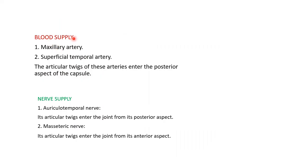The blood supply of the temporomandibular joint comes from the maxillary artery and the superficial temporal artery. Their articular twigs enter the posterior aspect of the capsule. The nerve supply is from the auriculotemporal nerve, whose articular twigs enter from the posterior aspect, and the masseteric nerve, whose articular twigs enter from the anterior aspect.